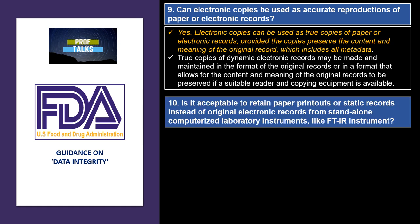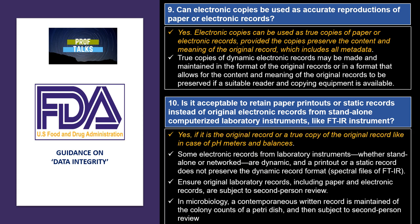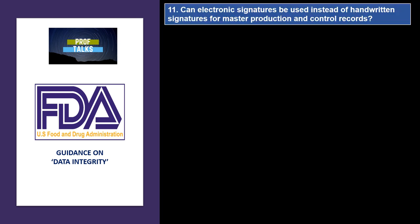Is it acceptable to retain paper printouts or static records instead of original electronic records for standalone equipment like FTIR? Yes, it is acceptable for instruments like pH meters and balances. However, some electronic instruments like FTIR are dynamic in nature, and a printout or static record does not preserve the dynamic record format. It should be ensured that original laboratory reports, including paper-based records, are subjected to a second-person review. In microbiology, a contemporaneous record is maintained of the colony counts of a petri dish and then subjected to second-person review.